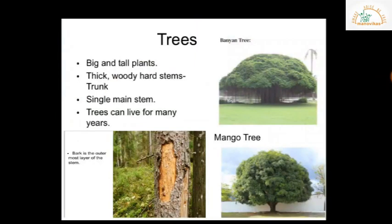Trees have evolved to tower over other plants. They are big and tall plants. The four main parts of a tree are the root, the trunk, branches, and leaves. Unlike small plants with soft flexible stems, trees have a very thick, woody, and hard stem called the trunk. The trunk is covered by an outside layer called bark, which protects the tree from all kinds of weather conditions and from being eaten by animals.